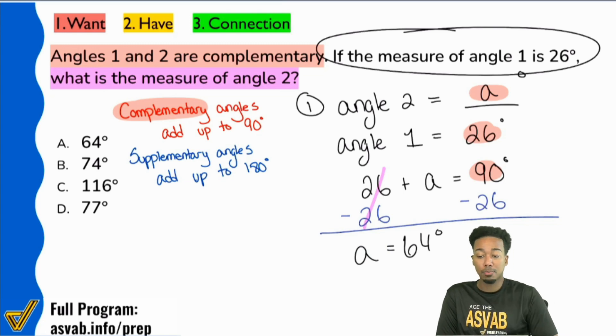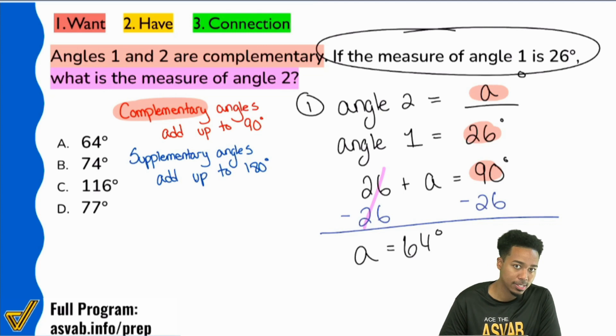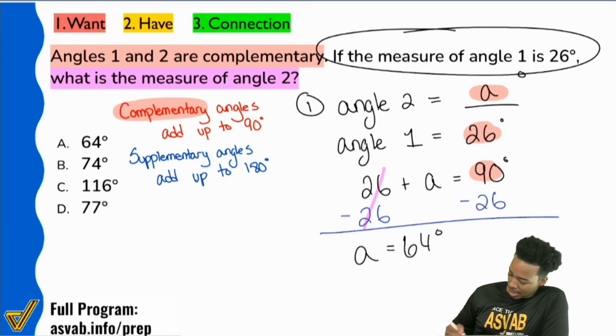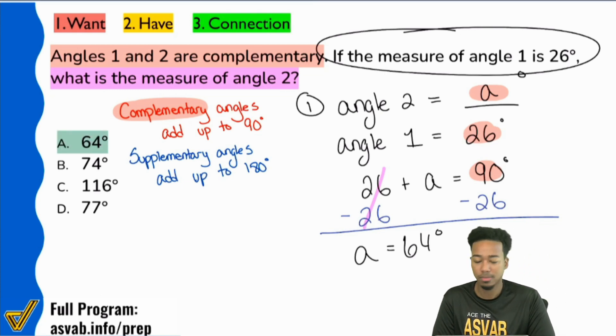You have to be able to add pretty quickly here. 90 minus 26, some mental math for you. You can subtract the 20 first, and then subtract the 6. So 90 minus 20 is 70. 70 minus 6 is 64. And there we go. 64 degrees. There's your answer.